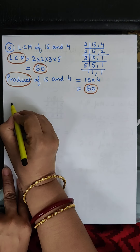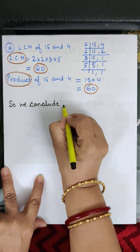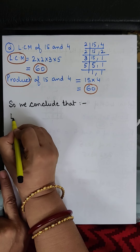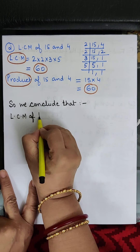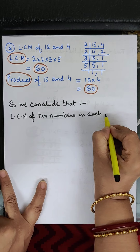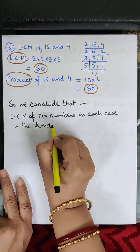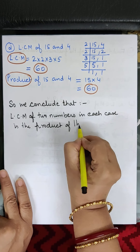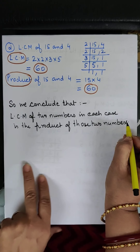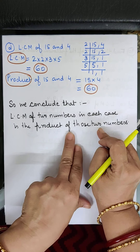So we have observed that the LCM is equal to the product of the numbers. We conclude that the LCM of two numbers in each case is the product of those two numbers. Is this clear? With this I wind up; in the next class I shall take up the next question.